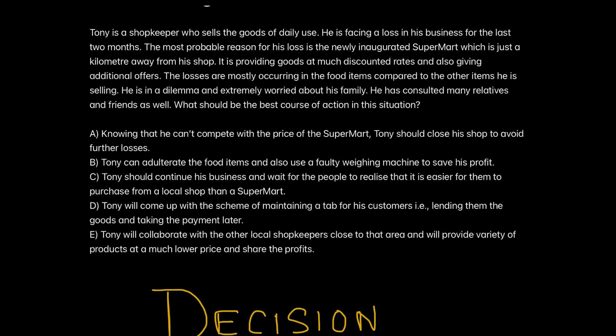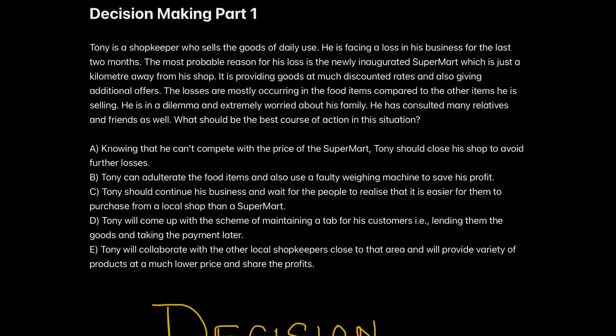Option B says Tony can adulterate the food items and use a faulty weighing machine to save his profit. This is profitable for Tony but unethical with respect to his customers, and gaining profits by harming others is not a correct decision. So option B is also eliminated. To summarize the classification: in every decision making question, one option will be a bad decision for the person involved, and another will be profitable for that person but unethical for others.